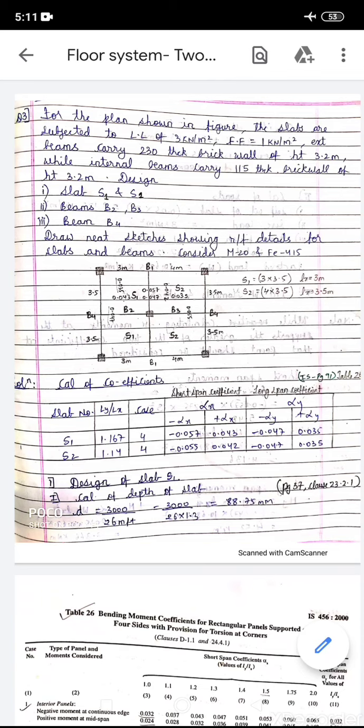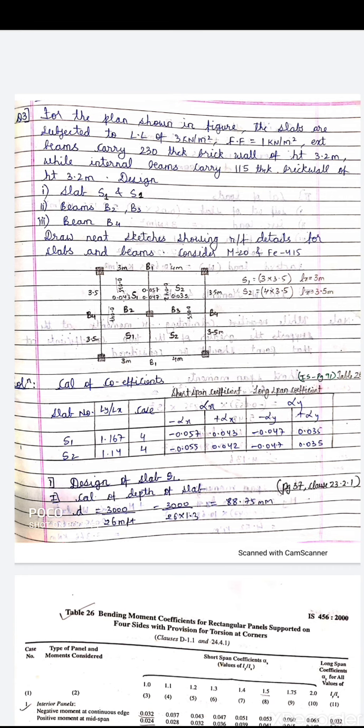Hello everyone. Today we are going to start with a new module: design of floor systems. In this we are going to see a floor system in which we have slabs and beams — we are going to design the slab and the beam. In TRCS we have already done this; we know how to design a one-way slab, a two-way slab, and a beam. The only difference is in this module we are going to design the slab and the beam together in one problem.